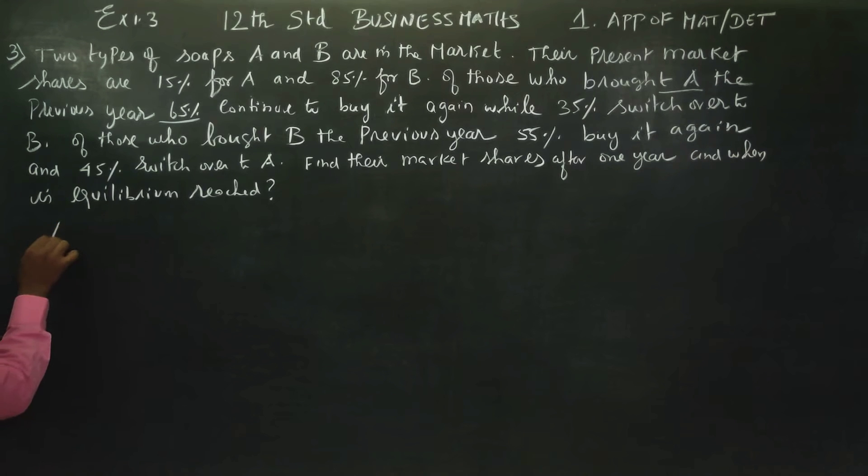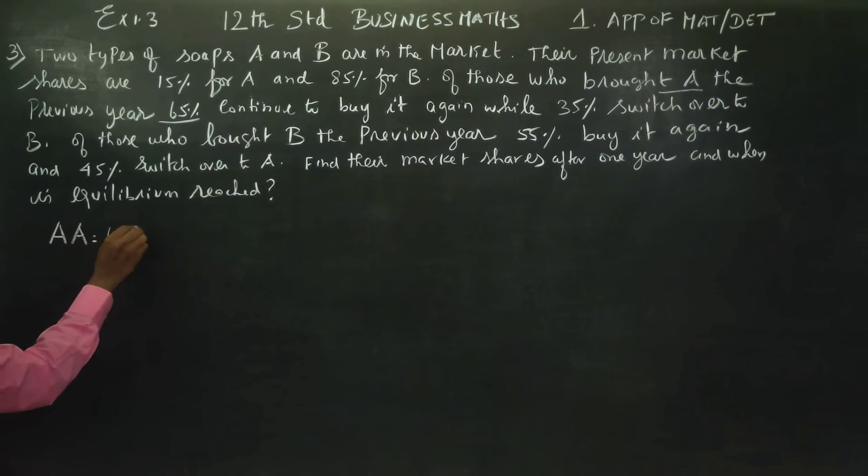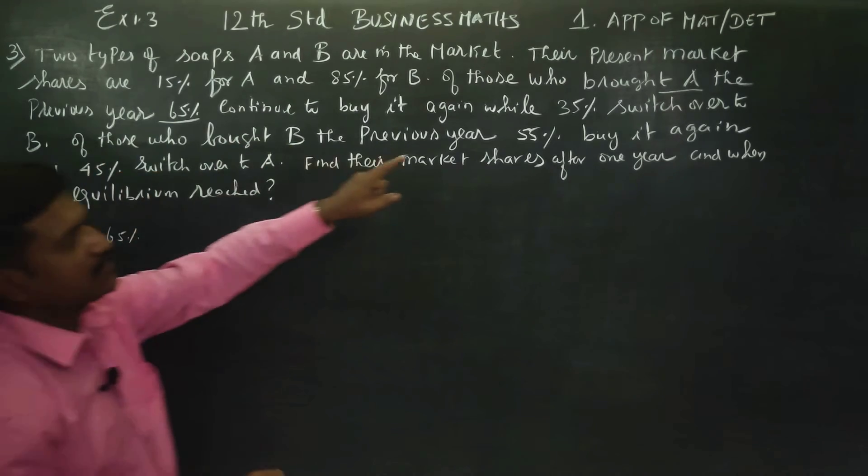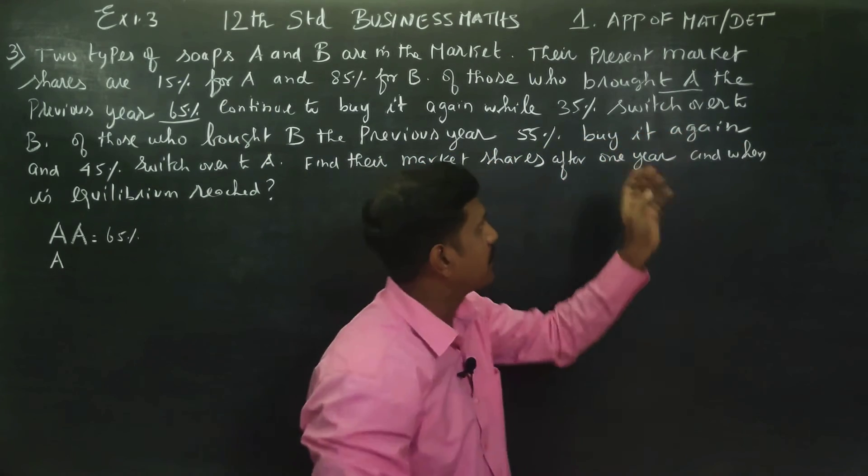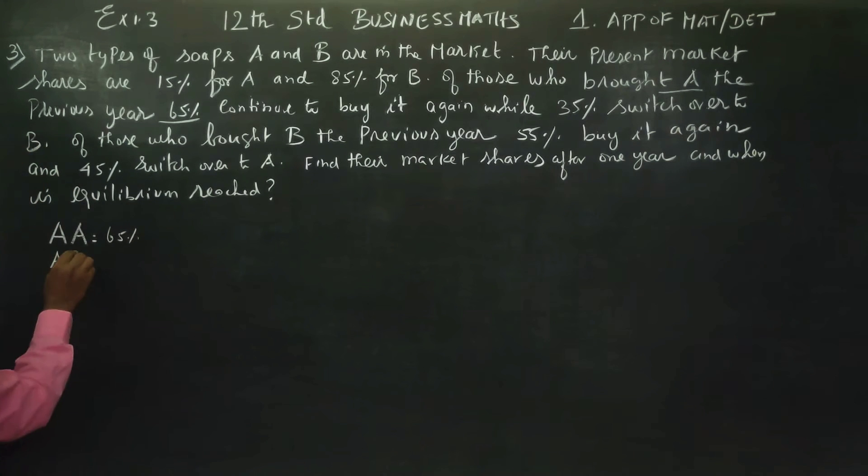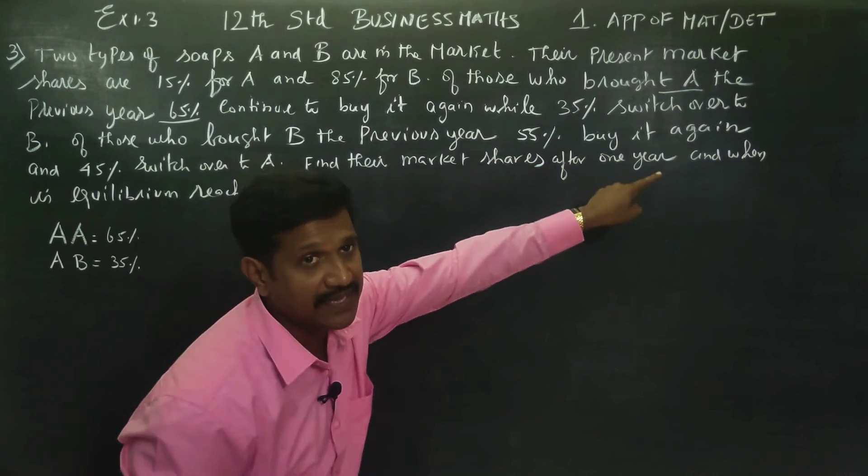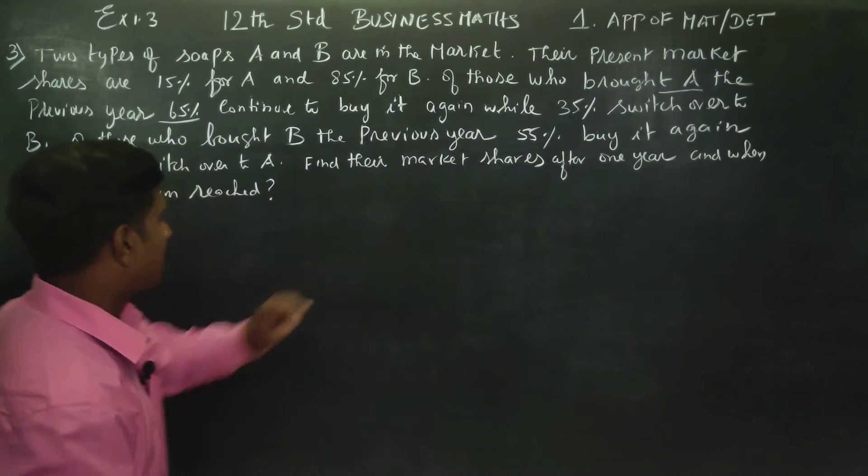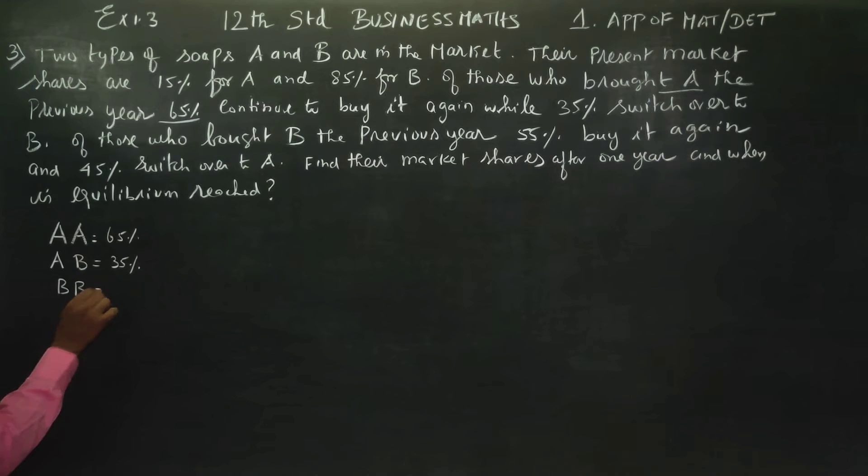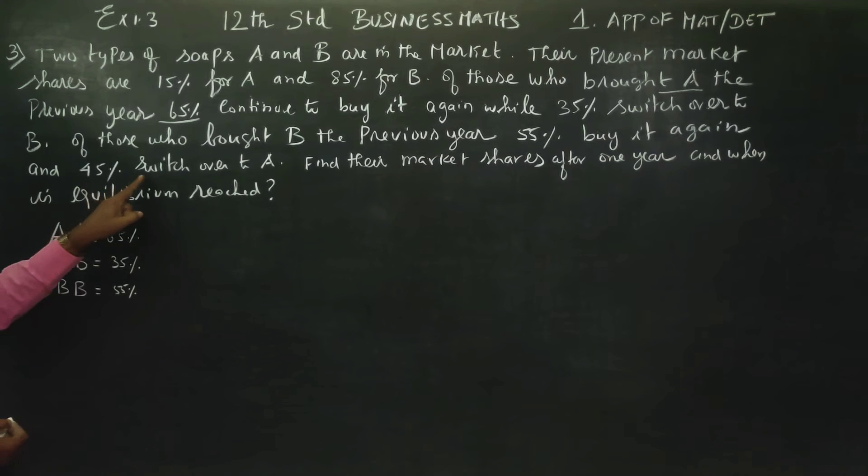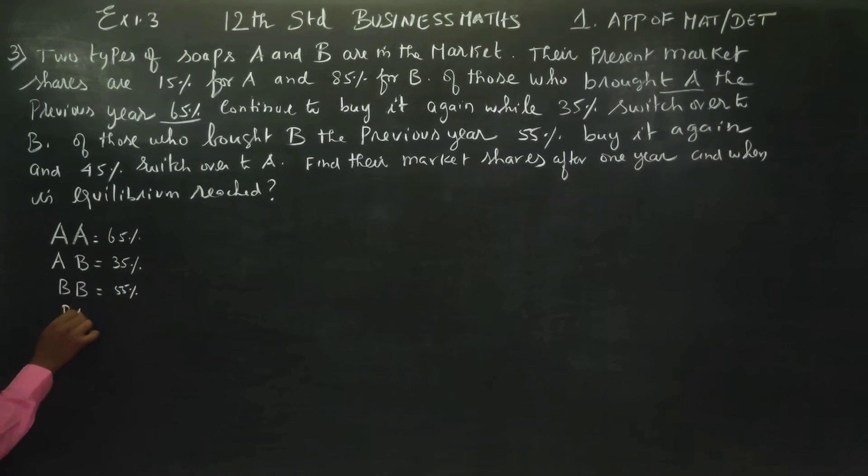In such a way, of those who bought A soap, 65% continued to buy A again, and 35% switched to B. Of those who bought B the previous year, 55% buy it again, while 45% switch over to A.